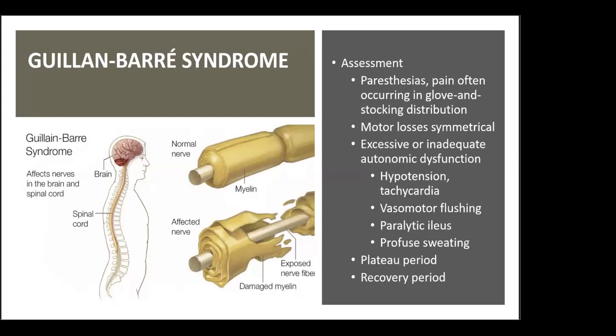Guillain-Barré syndrome is a condition in which the immune system attacks the nerve, causing damaged myelin with exposed nerve fibers. It may be triggered by acute bacterial or viral infection or follow immunizations. Symptoms typically start as weakness and tingling in the feet and legs, later spreading to the upper body, and subsequently paralysis can occur.